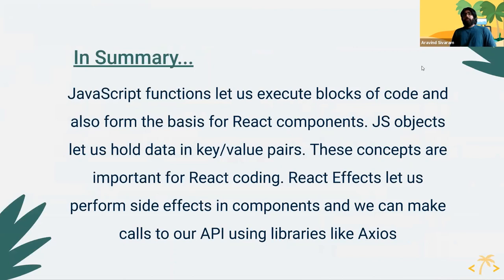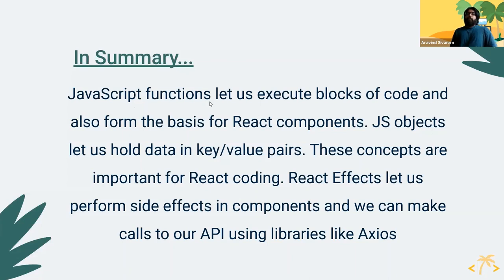To review quickly: functions allow us to execute code, we can nest functions inside each other, and we can use functions to represent components in JavaScript. Objects in JavaScript allow us to work more easily with APIs by representing data in key-value pairs. And the React effect hook allows us to work with changes, especially when we make API calls, giving us an easier way to control what happens when we re-render or when specific variables change.